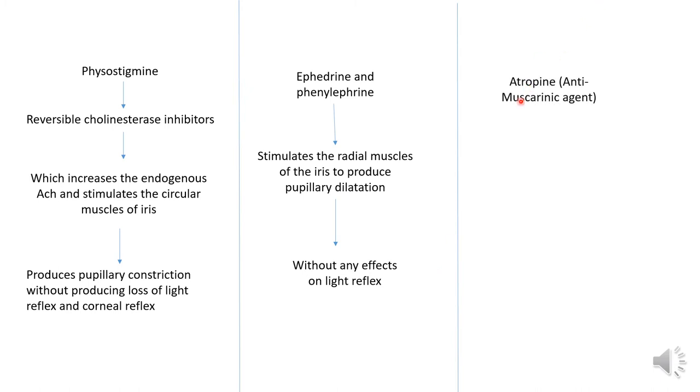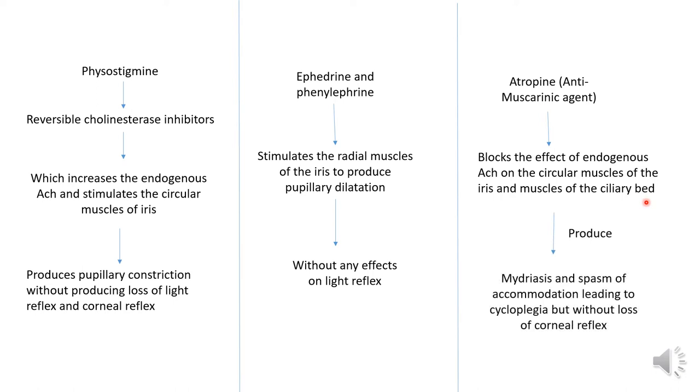The drug Atropine is an antimuscarinic agent or anticholinergic drug. It blocks the effect of endogenous acetylcholine on the circular muscle of the iris and ciliary body. Because of this, it produces mydriasis or dilation and spasm of accommodation leading to cycloplegia, but without loss of corneal reflex.